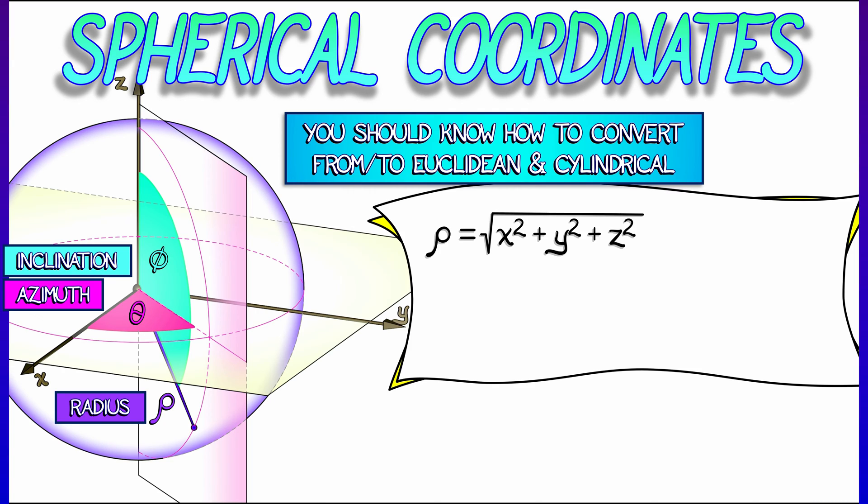The first is easy. Rho is square root of x squared plus y squared plus z squared. That one makes a lot of sense. That's the Pythagorean theorem.